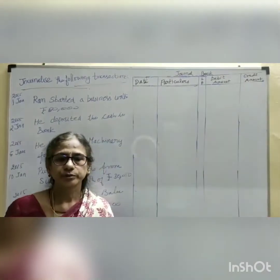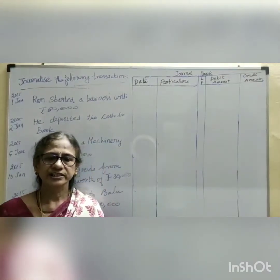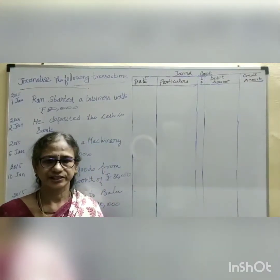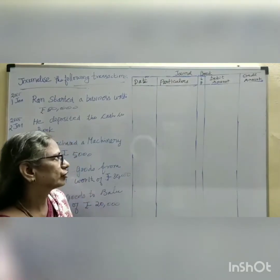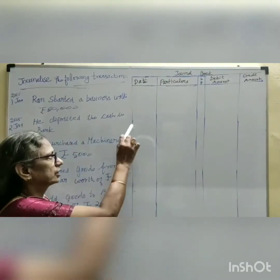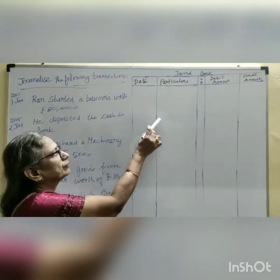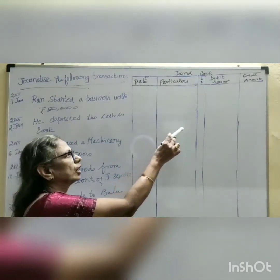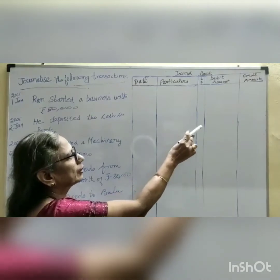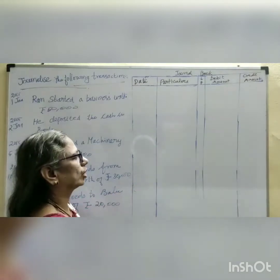Now, we are going to journalize five transactions in the journal book. The journal book has a date column, particulars column, LF column, debit column, and credit column.